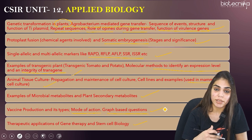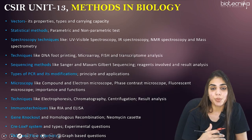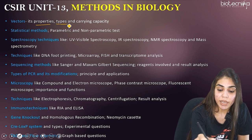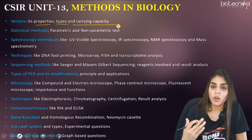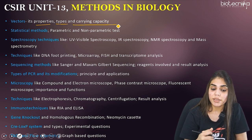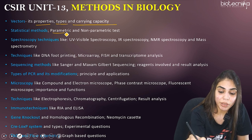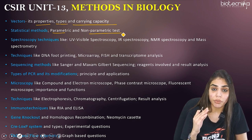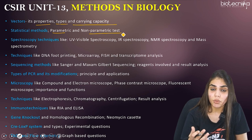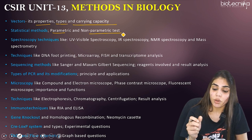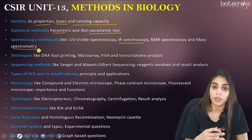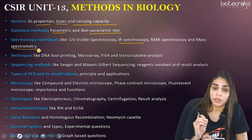Coming to the last unit, Unit 13, Methods in Biology. First, study vectors — properties, types, and carrying capacity of all vectors: phage, cosmid, plasmid. Next, statistical methods — parametric and non-parametric tests such as t-test and chi-square test. Then spectroscopy techniques — UV-visible spectroscopy, Beer-Lambert law formula and numericals, chromophores in DNA and protein, amino acids responsible for absorbing light wavelengths, and also IR spectroscopy, NMR spectroscopy, and mass spectrometry calculations.